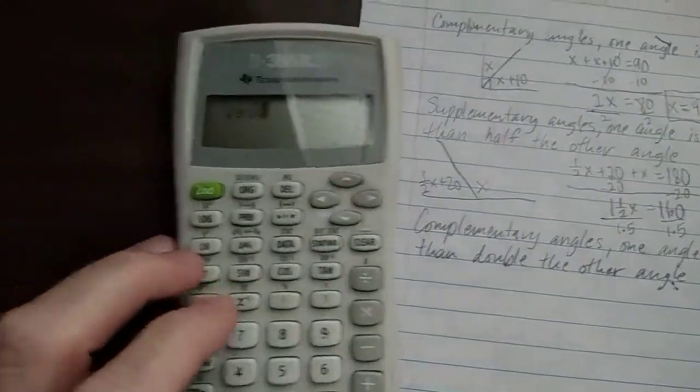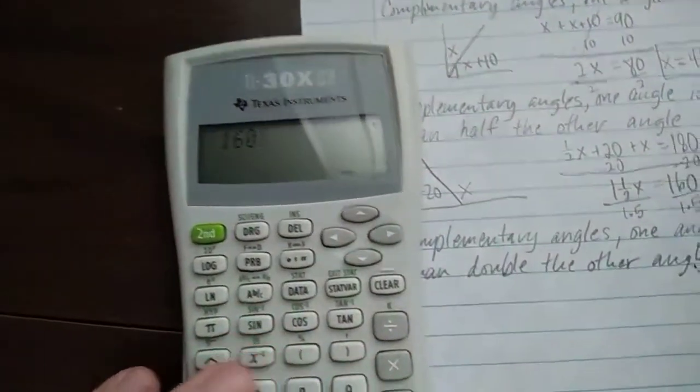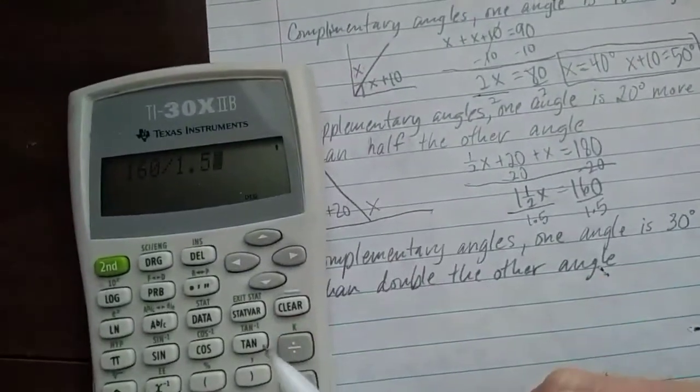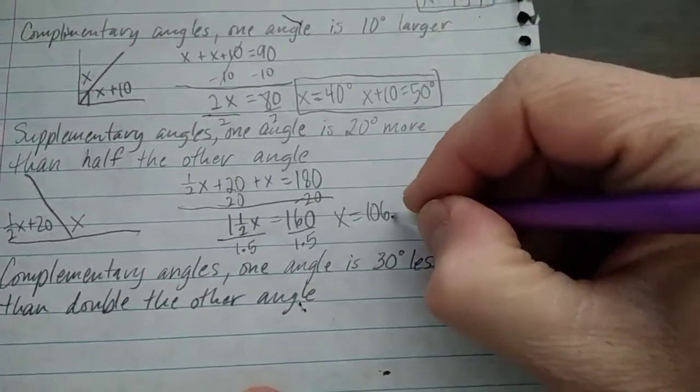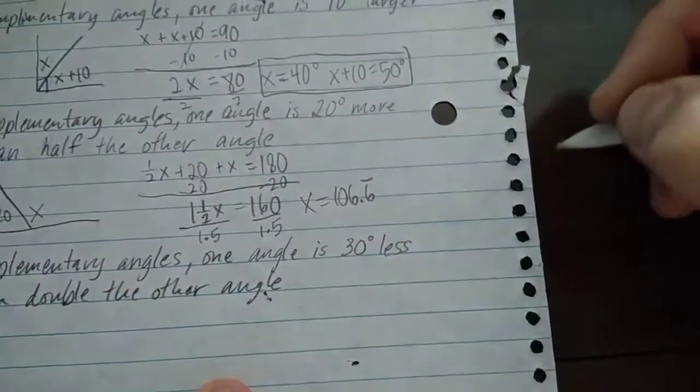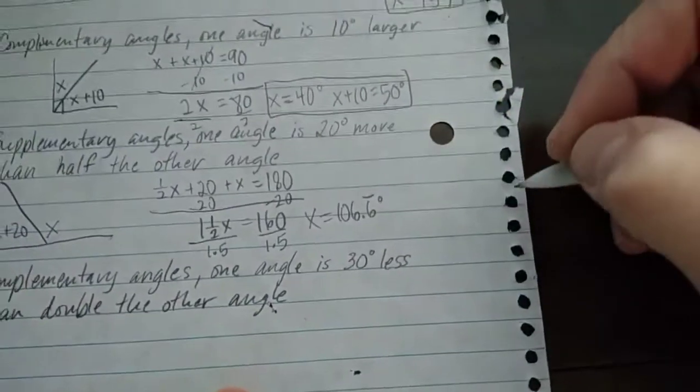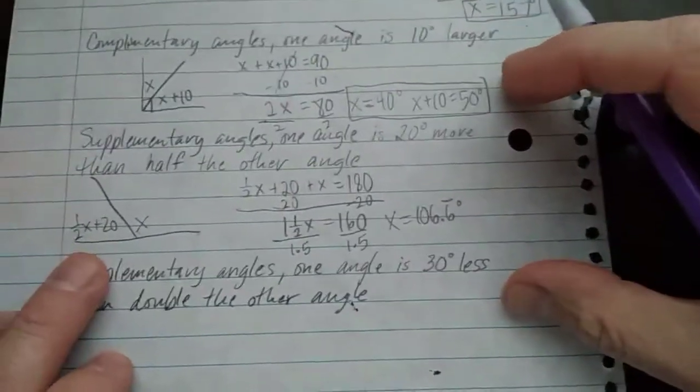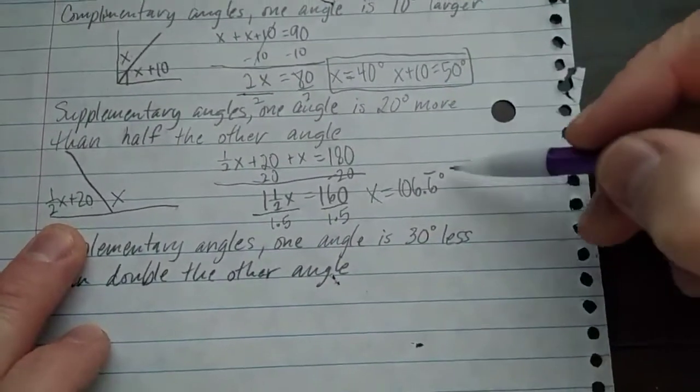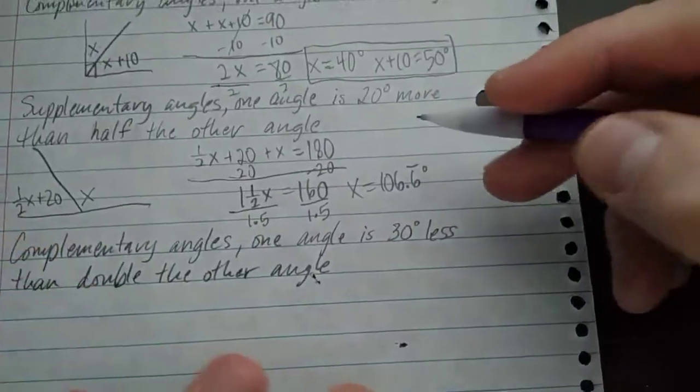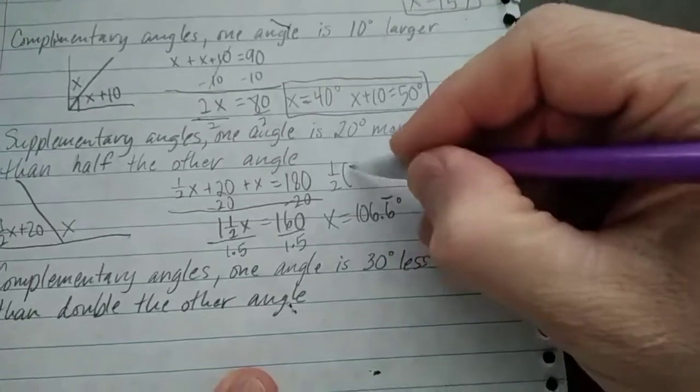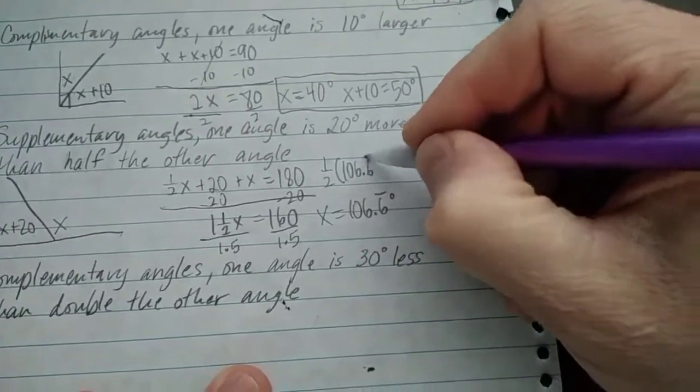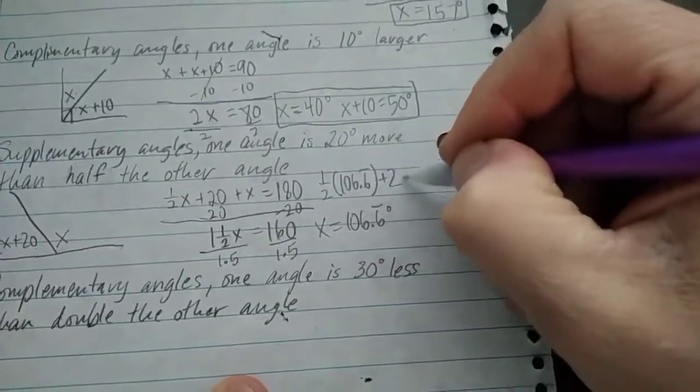So do that in my calculator. I don't know if you can really see that. It's got a bad glare on it. Divided by 1.5. And that's 106 and two thirds. So x equals 106.6 repeated degrees. And so to find the other angle, now if it just says solve for x, I'm done right there. If it says to find the measure of both angles, now I need to do one half times 106.6 repeated and then add 20.